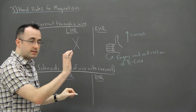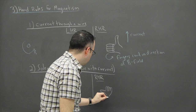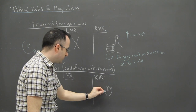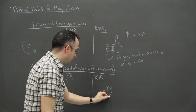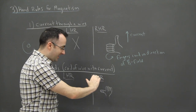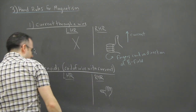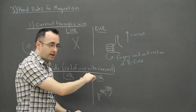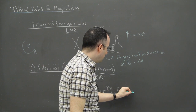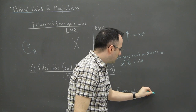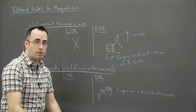For the solenoid right hand rule, I draw my hand differently. This time, the thumb represents the direction of the magnetic field — the direction that the north of a compass would point — and your fingers curl in the direction of the current.